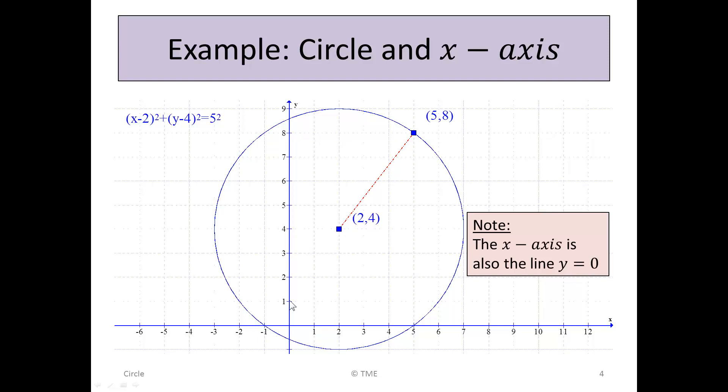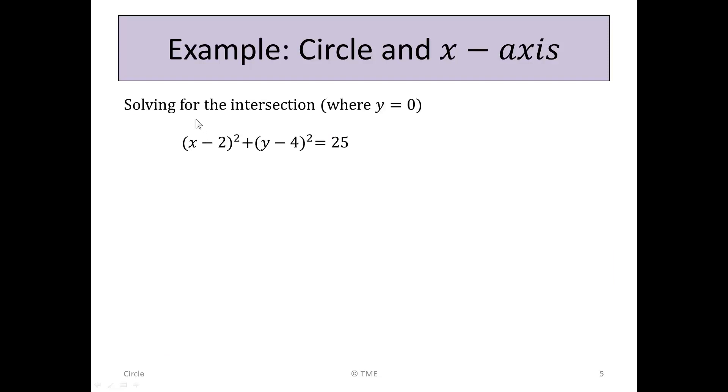It's always y is 0. So in effect, it's an equation and we can find when it intersects with the other equation. Solving for the intersection, the original circle was (x - 2)² + (y - 4)² = 25, and we're going to see where that cuts the line y = 0 by substituting the value y = 0 into this.